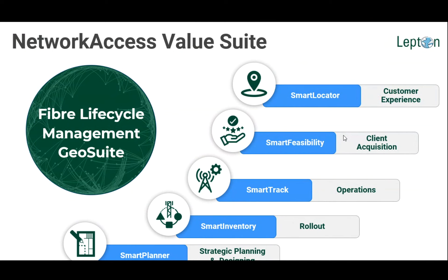The Network Access solution suite addresses the full network lifecycle journey from planning to customer experience. Smart Planner enables operators to conduct both strategic and design planning using intelligent algorithms and automation — with minimal input like where your customers are and where your supply office will be located. The solution automatically uses routing algorithms to build up the feeder networks, distribution cables, and access cables connecting all the way to the customer. Configuration rule sets can be fed in, and the solution allows operators to provide their own engineering rule sets for this automated planning.